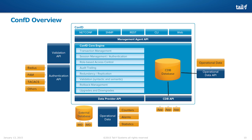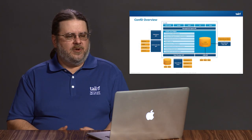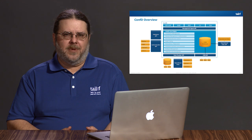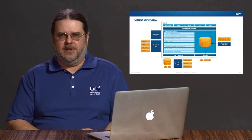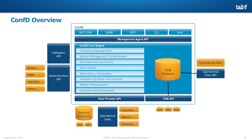There is also operational data that you can instrument through the data provider API. These two different methods of doing your operational data provide a push method and a pull method. For push mode, your application periodically writes data into the CDB database, and if a read request comes in for that data, we satisfy it from whatever is currently in the database. In the pull model, implemented via the data provider API, you'll register callback functions, and when someone goes to read that data, ConfD will invoke your callback functions to provide the current value.